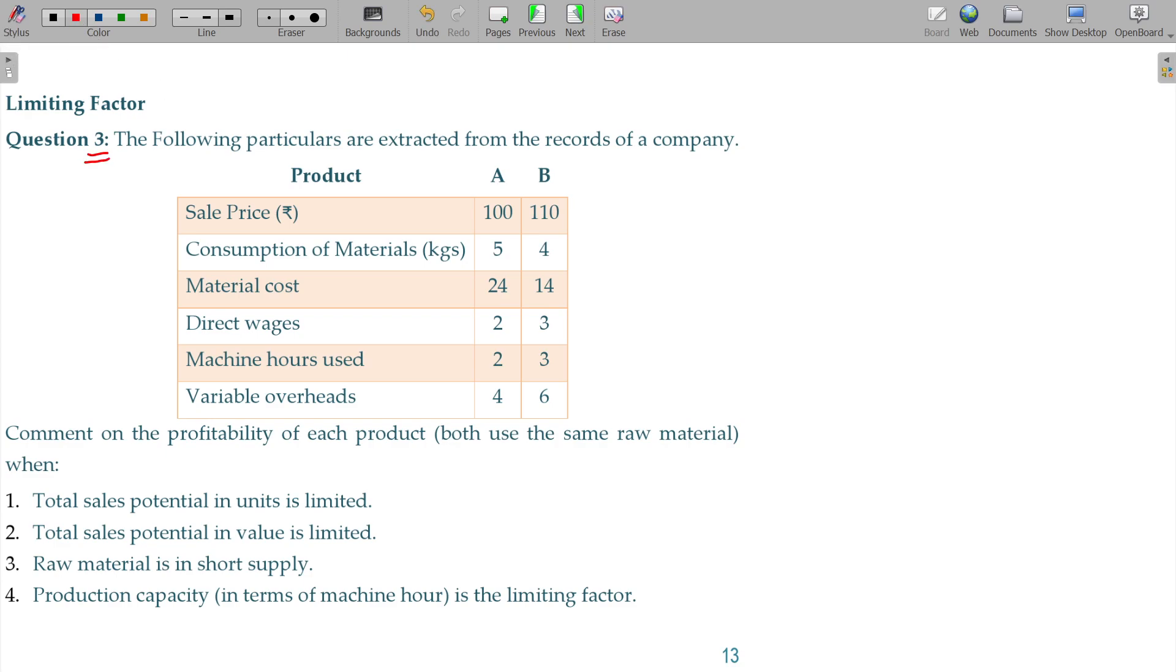Now, question number 3. The following particulars are extracted from the records of a company. Two products are there, A and B, with sale prices being 100 and 110. This shows consumption of materials, material cost, direct wages, and variable overhead.